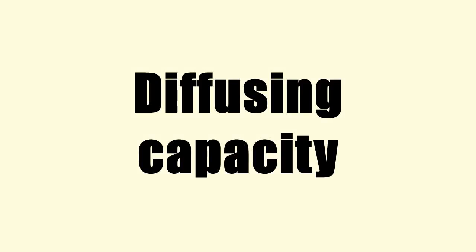Diffusing capacity of the lung measures the transfer of gas from air in the lung to the red blood cells in lung blood vessels. It is part of a comprehensive series of tests to determine the overall ability of the lung to transport gas into and out of the blood.